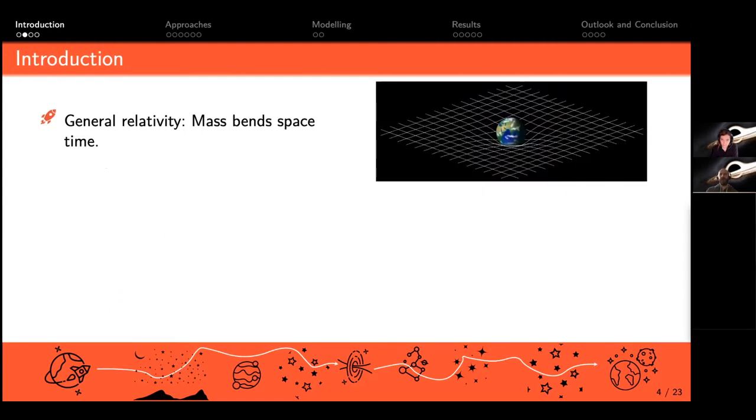On the right hand side you see a picture of the general relativity theory by Einstein. Basically every mass deforms the space-time, so there will be a bend of this grid you see here.